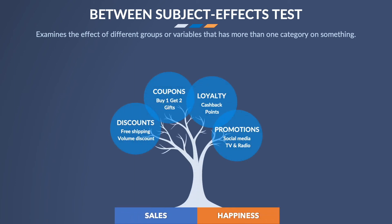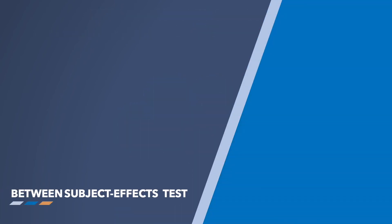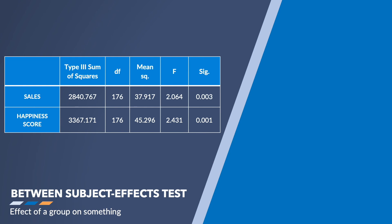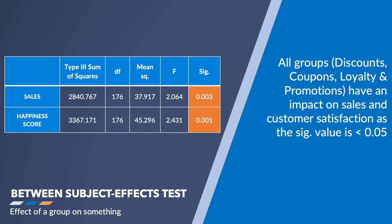This table shows how different discount schemes affected the company's customer satisfaction as well as sales. It also shows the significance value for sales and satisfaction score in separate rows; however, it does not show each independent variable or group's effect separately. The significance value should be less than 0.05 to be considered significant. In our case, the significance value for both dependent variables is less than 0.05, so there is a relationship between all the groups — discount, coupon, loyalty program, and advertisement — on sales and satisfaction score.